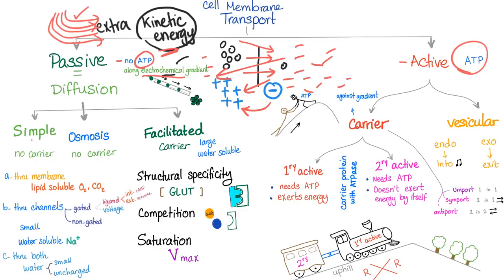There are three types of diffusion: simple diffusion, osmosis, and facilitated diffusion. Shocker — osmosis is actually a subtype of simple diffusion. Simple diffusion is the movement of a substance from high concentration to low concentration. Osmosis is simple diffusion for water — movement of water from high concentration of water to low concentration of water. Your book might say 'from low concentration of solutes to high concentration of solutes,' but it's the same thing. Facilitated diffusion needs a carrier; simple diffusion does not.